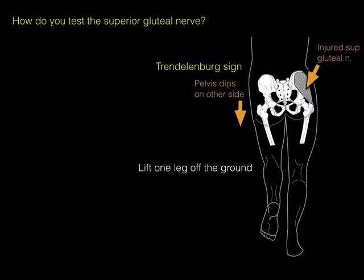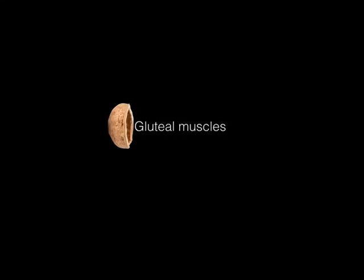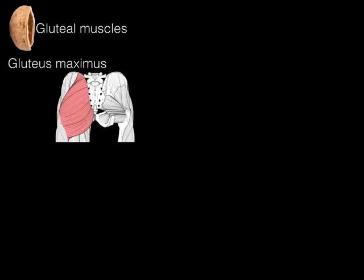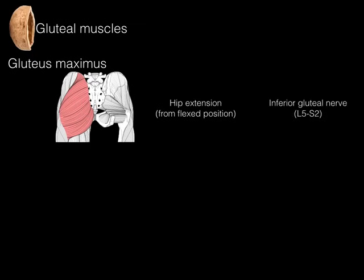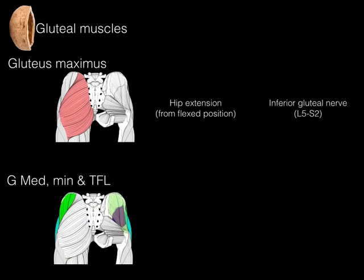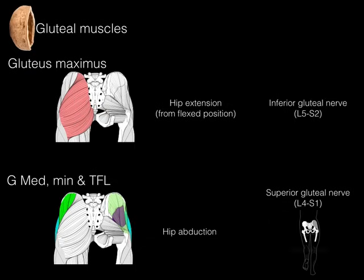This is known as the Trendelenburg sign. In summary: the gluteus maximus extends the hip from a flexed position and is innervated by the inferior gluteal nerve from L5 to S2 spinal cord levels. The gluteus medius, minimus, and TFL perform hip abduction and stabilization of the pelvis, innervated by the superior gluteal nerve. If the superior gluteal nerve is injured, the patient presents with the Trendelenburg sign.